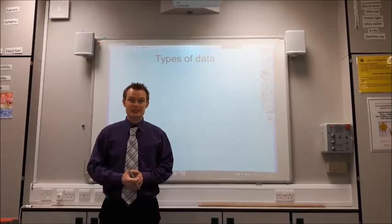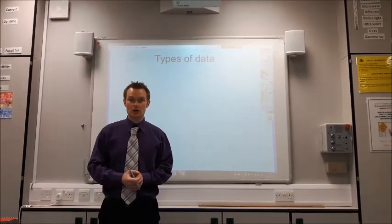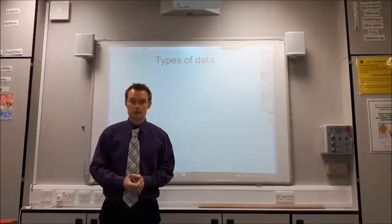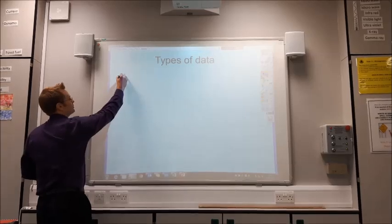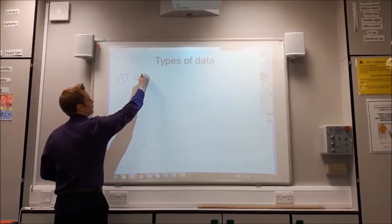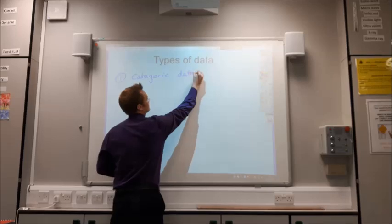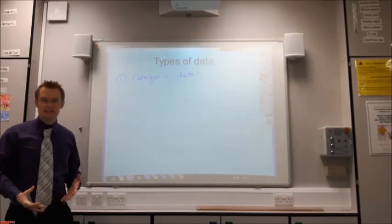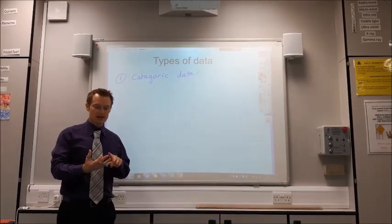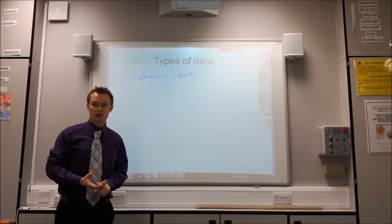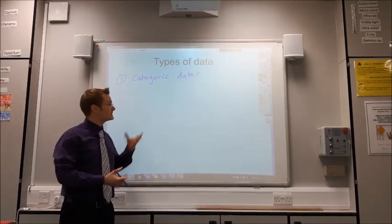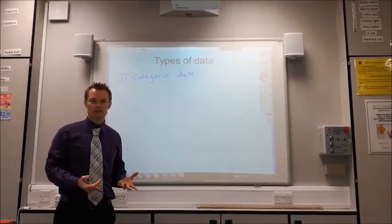Now, first of all, I want to recap quickly the types of data that you've got and how that influences the type of graph that you use. The first type of data is what we call categoric data. This is what we're dealing with in this instance because on a Leslie cube we have different colours on each side and colours go into categories.